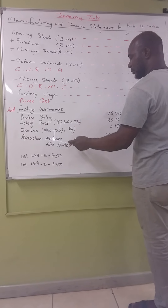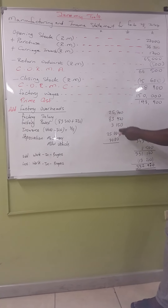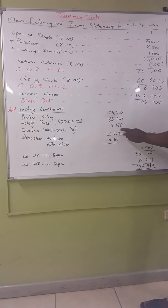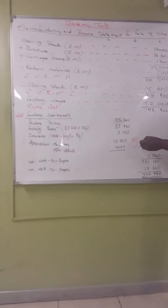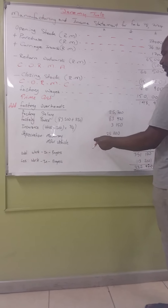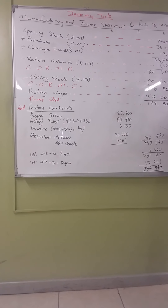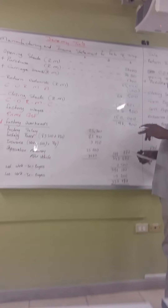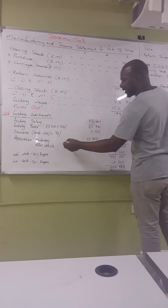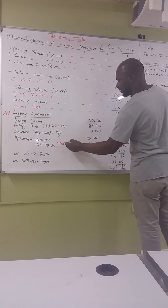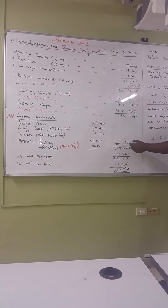Next we calculate depreciation. Note 1 speaks to this. Depreciation for machinery was 25,000. For motor vehicle, the cost was 140,000; at 10% straight-line that gives 14,000. However, the note states the motor vehicle was used in the factory and office equally — 50% each. So 14,000 multiplied by 50% gives 7,000 for the factory and 7,000 for the office.